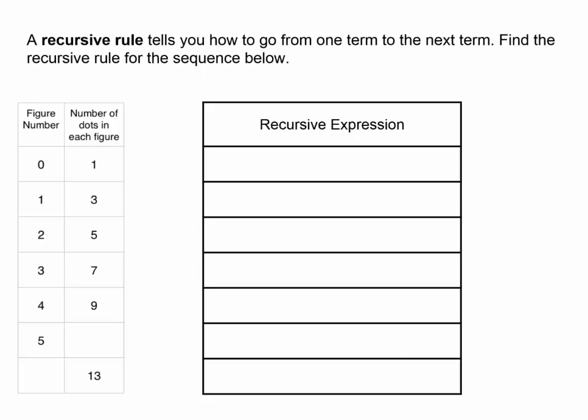I put this sequence into a table so we can analyze the pattern it makes. We can summarize the pattern with rules. A recursive rule tells you how to go from one term to the next term. Let's find the recursive rule for this sequence. It's easy to see that we are just adding two each time.